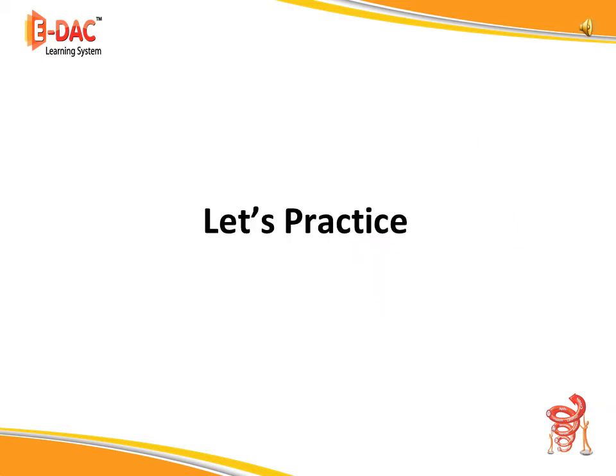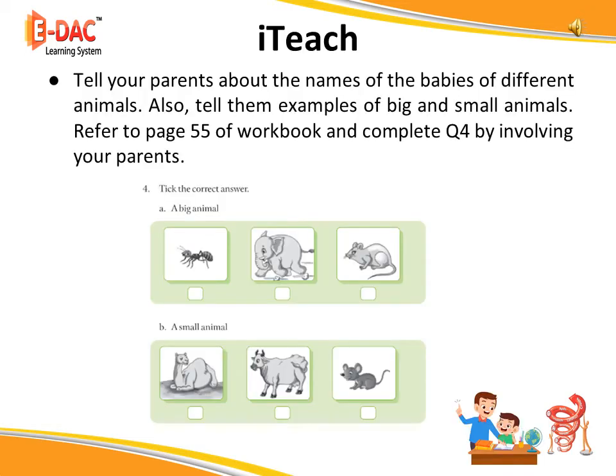Let us now practice the concepts learnt in this chapter by doing some activities that are very interesting and fun to do. I teach: tell your parents about the names of the babies of different animals. Also tell them examples of big and small animals. Refer to page number 55 of the workbook and complete question number 4 by involving your parents.